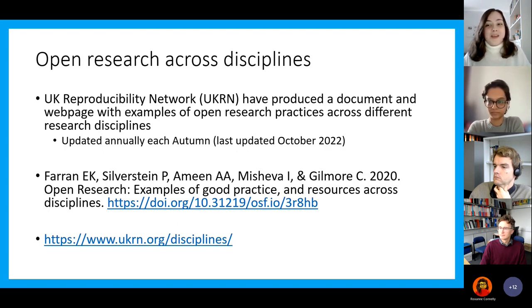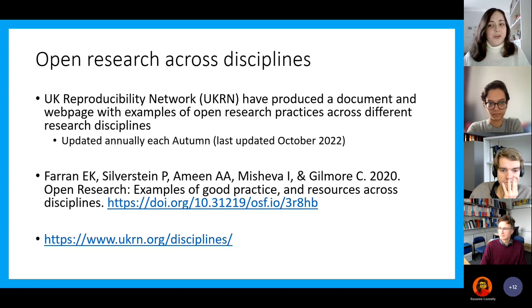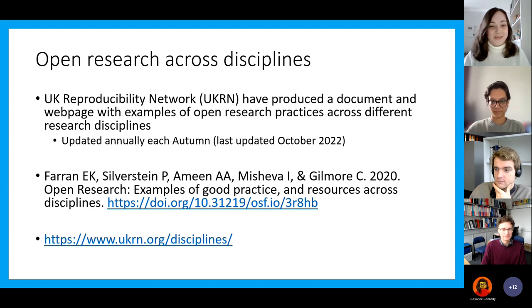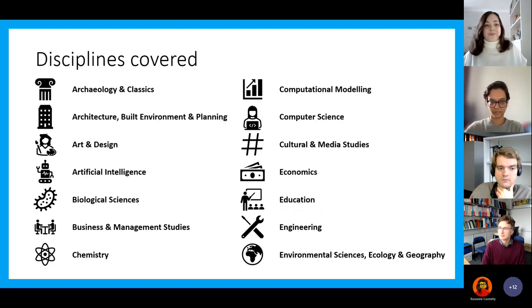To help with this, the UK Reproducibility Network have developed a document and web page with specific examples of open research practices across many different research disciplines. The document is updated annually and was last updated in October this year. It's available on the Open Science Framework as a preprint, and all the resources linked can be found on the web page on the UK RN website. The reference and links are in the slides, which should be in the chat on our website. We've got 28 different disciplines covered within the resource.